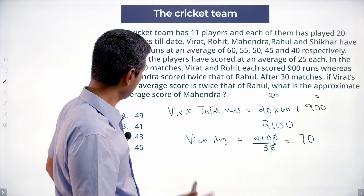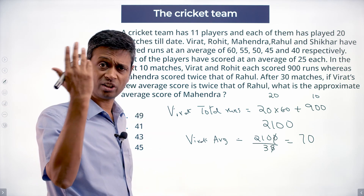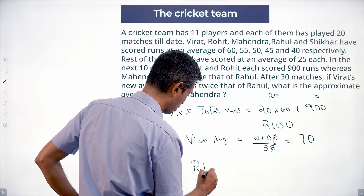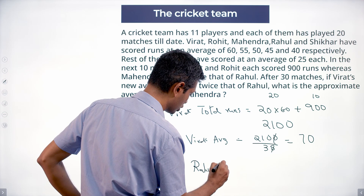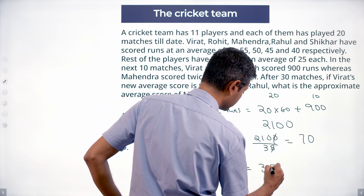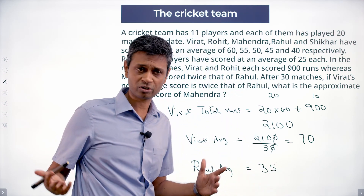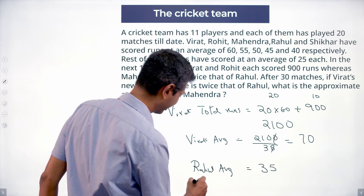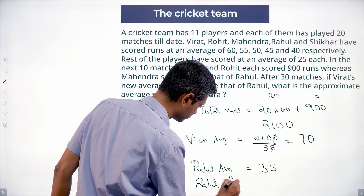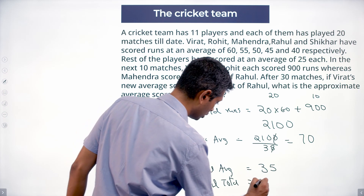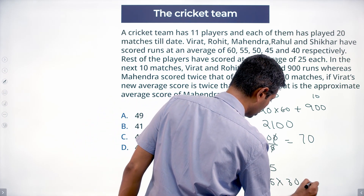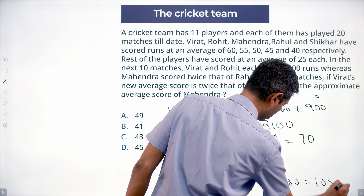At the end of 30 matches, Virat's new average is twice that of Rahul, so Rahul's new average is 35. Rahul's total at the end of 30 matches is 35 × 30, which is 1050.